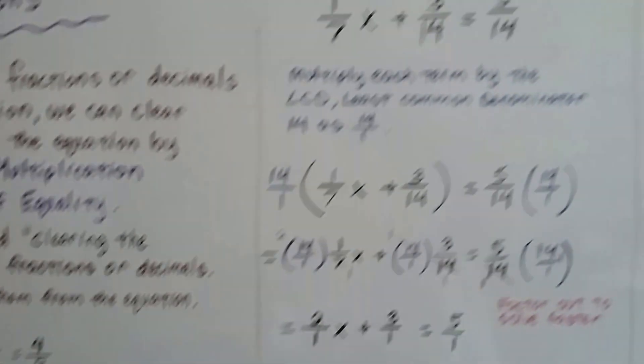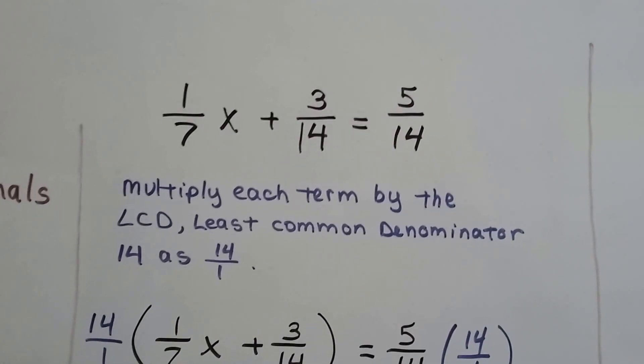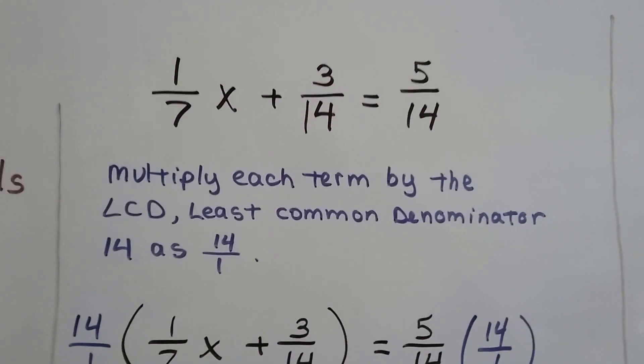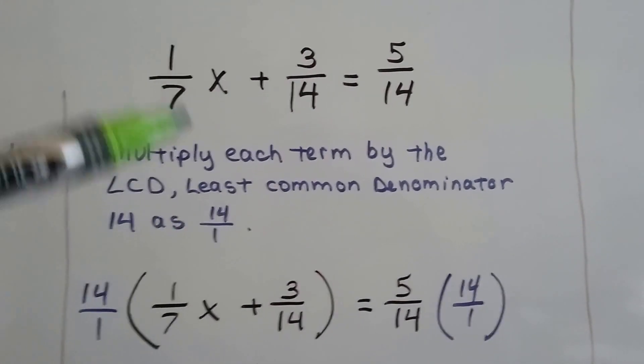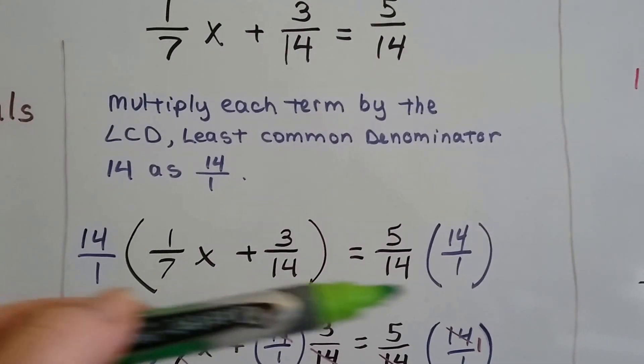Here's another one. We have 1/7x plus 3/14 equals 5/14. We multiply each term by that least common denominator, 14, as 14 over 1, because fractions make it easier on our eyes to multiply straight across numerators and denominators.